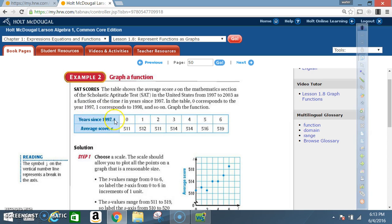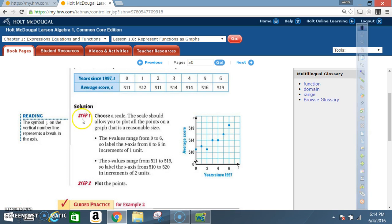Years since 1997, t, that's time, 0, average score, 511. When time was 1, average score was 512. When time was 2, 511, 3, 514, 4, 514, 5, 516, and 6, 519. Solution. Step 1. Choose a scale. The scale should allow you to plot all the points on a graph that is a reasonable size. The t values range from 0 to 6, so label the t-axis from 0 to 6 in increments of 1. The s values range from 511 to 519, so label the x-axis from 510 to 520 in increments of 2.